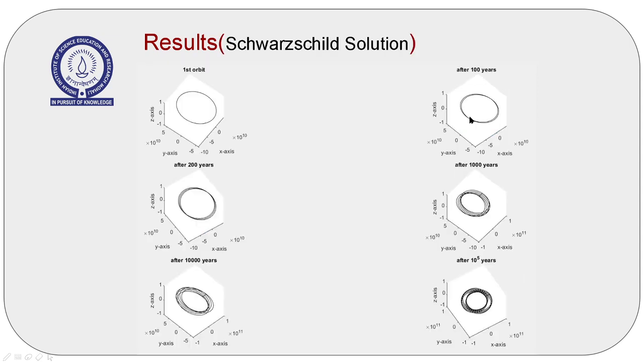And these are the plots for Mercury predicted by general theory of relativity. One can clearly see the perturbation in Mercury's orbit as time passes. The calculated value of perihelion precession due to the Sun is 42.94 arc seconds per century, which is pretty close to the missing 43 arc seconds per century in the precession of Mercury.